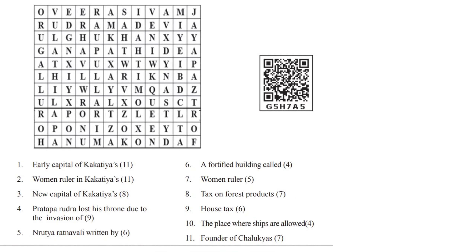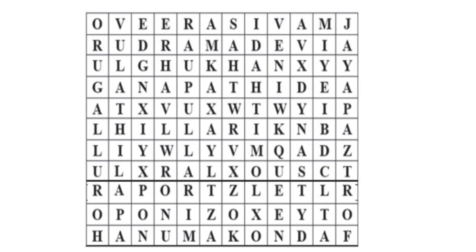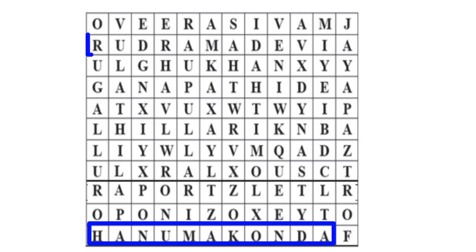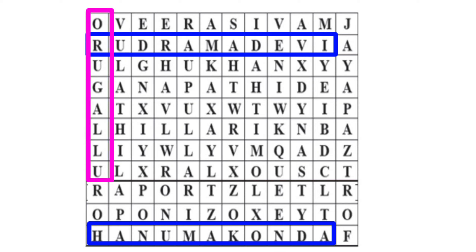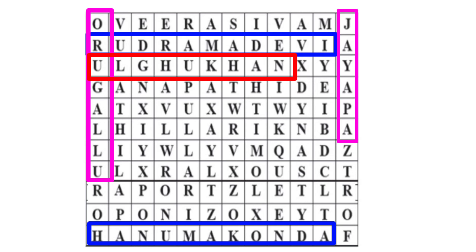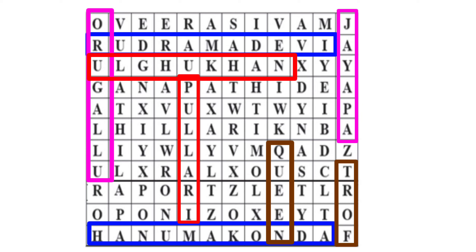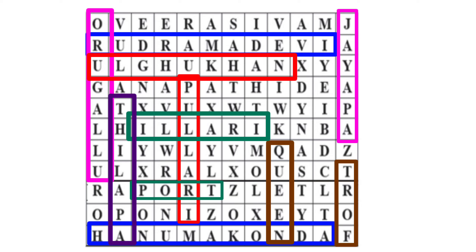Let's do the puzzle now. Draw boxes with the help of clue words. First clue: Early capital of Kakathiyas — Hanamakonda. Second: Woman ruler in Kakathiyas — Rudramadevi. Third: New capital of Kakathiyas — Orugallu. Fourth: Prataprudra lost his throne due to the invasion of Ulugh Khan. Fifth: Nrutiya Ratnavali written by Jayapa. Sixth: A fortified building called Fort. Seventh: Woman ruler — Queen. Eighth: Tax on forest products called Pullari. Ninth: House tax called Illari. Tenth: The place where ships are allowed called Port. Eleventh: Founder of Chalukyas was Tailapa.